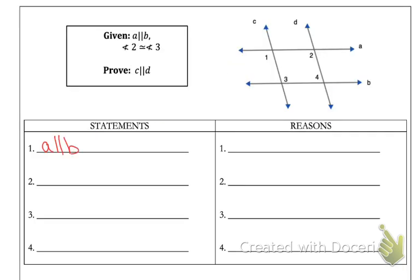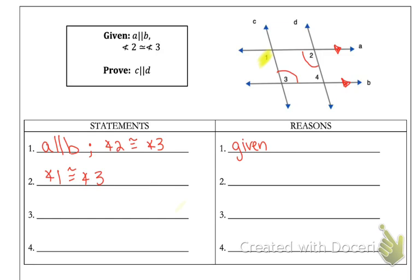On this example the picture is not marked, so make sure you're marking it. Line a is parallel to line b — mark that on the picture. We also have angle two congruent to angle three — mark that as well, and the reason is given. Because a is parallel to b, angle one is congruent to angle three because they are alternate interior angles.